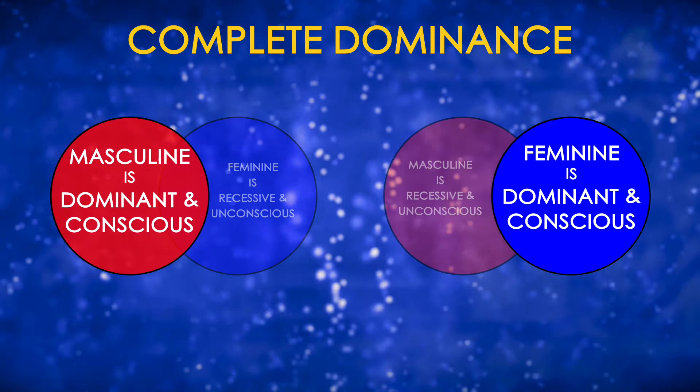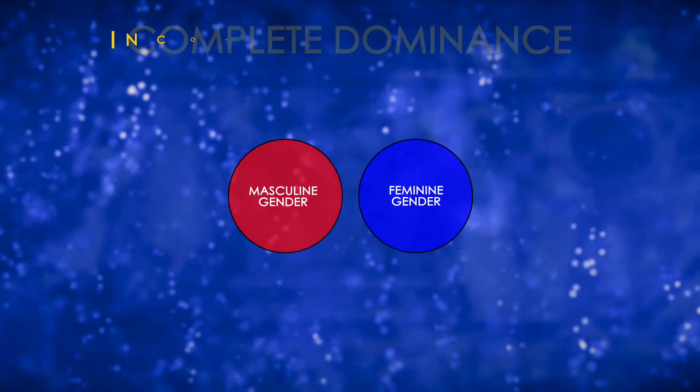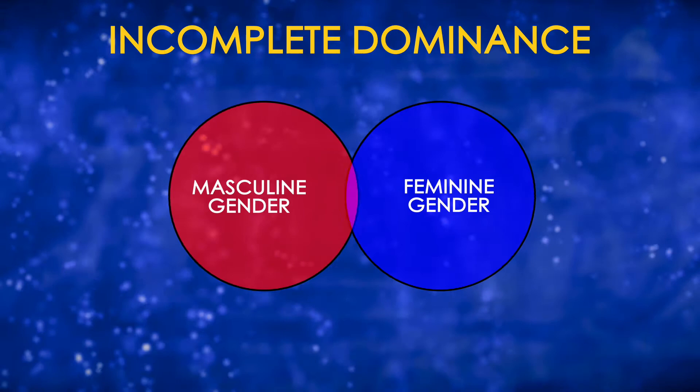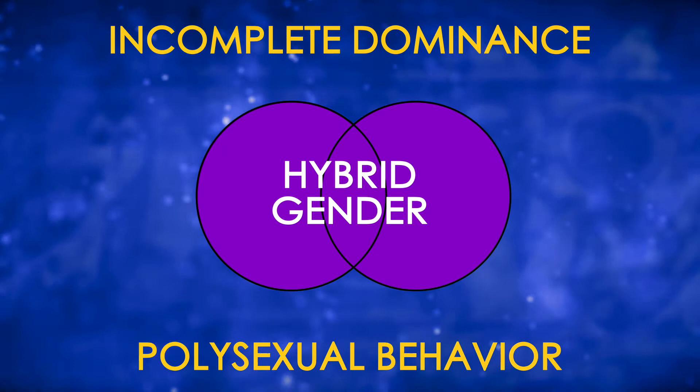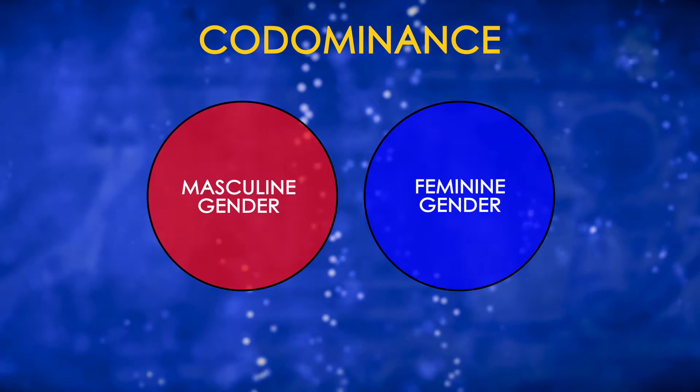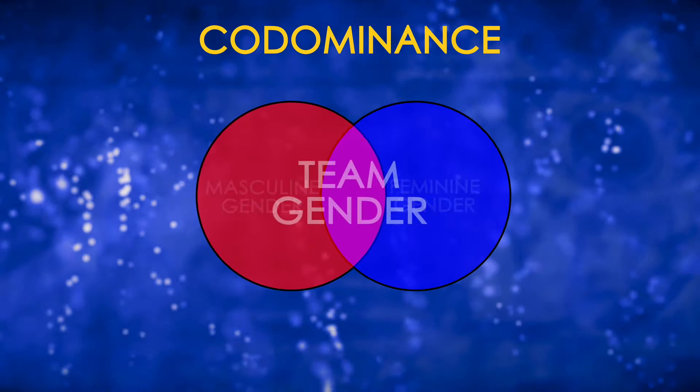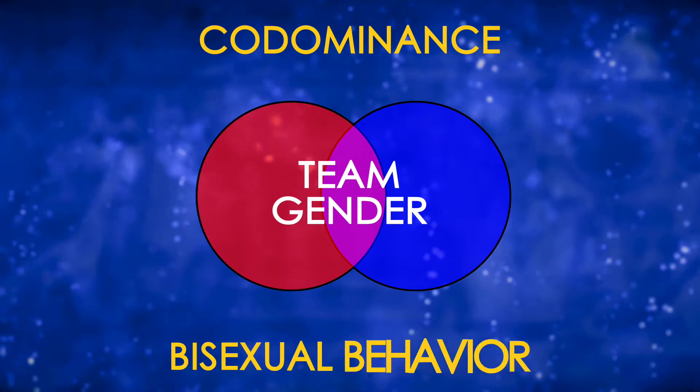In contrast, incomplete dominance and co-dominance integrate masculine and feminine gender. When incomplete dominance integrates binary gender, it creates a hybrid gender that produces polysexual behaviors. When co-dominance integrates binary gender, our masculine and feminine genders are both dominant. They cooperate — they work as a team. With two dominant genders informing us, we are bisexual.